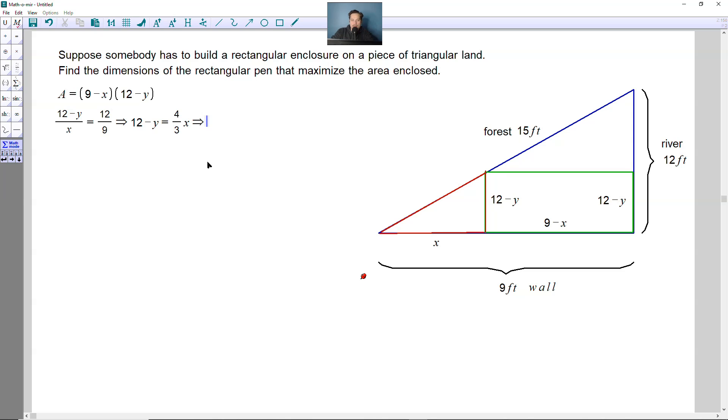Then you're going to multiply this by x. So it becomes 12 minus y is equal to 4 thirds x. Then you can subtract 12 from both sides, giving you negative y is equal to 4 thirds x minus 12. Then you can divide through by negative 1 to get rid of the negative on the y. It's going to tell you that y is equal to negative 4 thirds x plus 12.